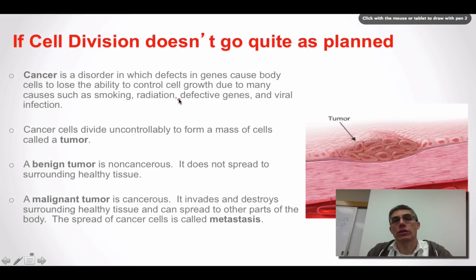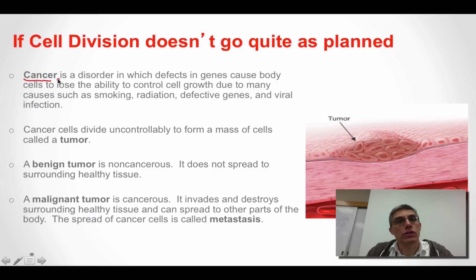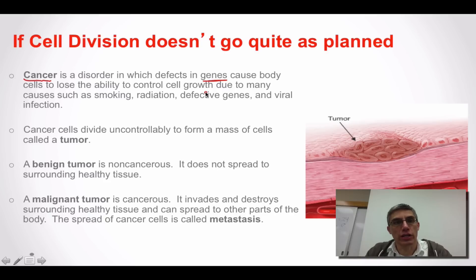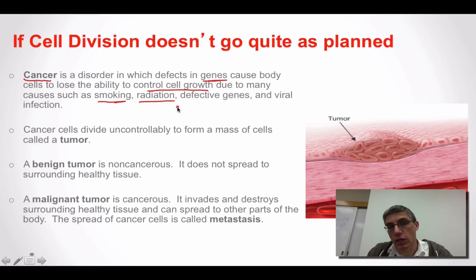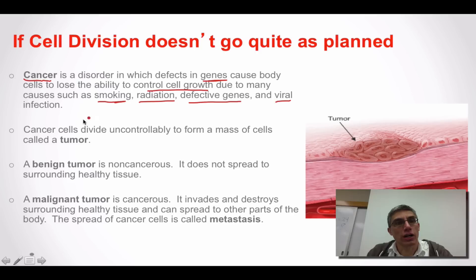Sometimes cell division doesn't go as planned. Cancer is a good example of cell division gone awry. Cancer is a disorder in which there are defects in the genes within the cell or defects in the proteins that determine how a cell goes through the cell cycle. Essentially, cancer is when a cell loses the ability to control cell growth. Causes include smoking, exposure to radiation such as x-rays or CAT scans, inheriting a defective gene, and some viruses that interfere with those regulatory proteins — the cyclins.